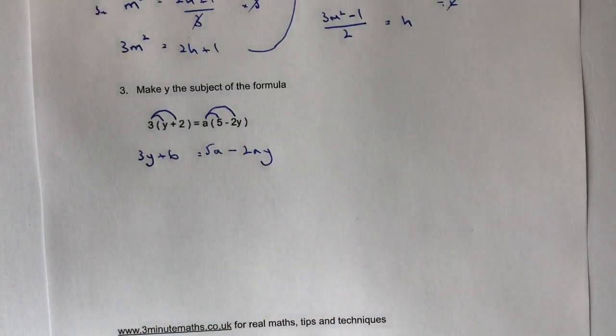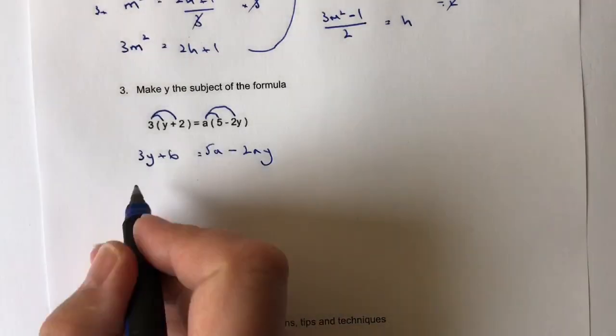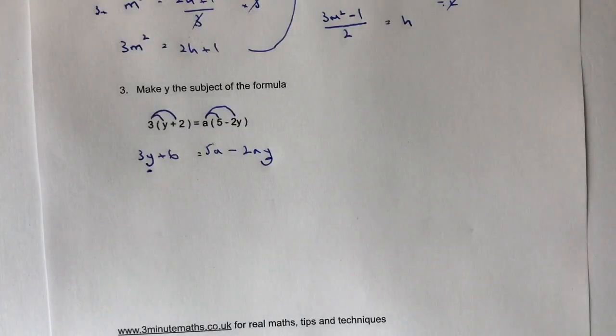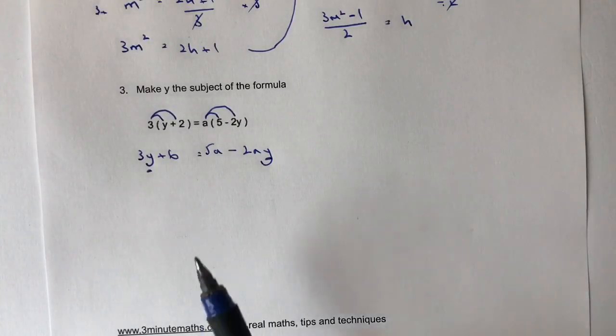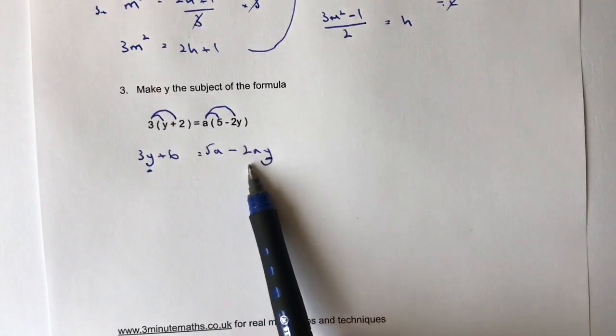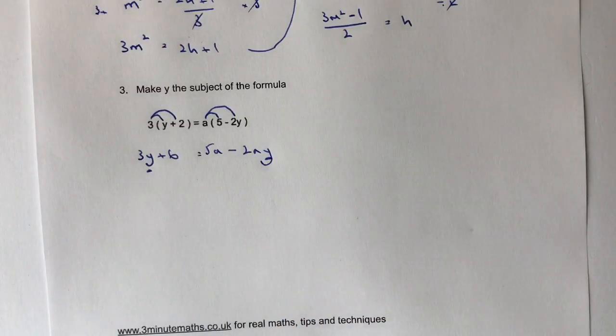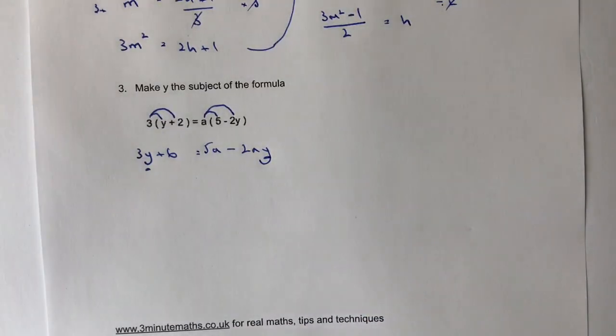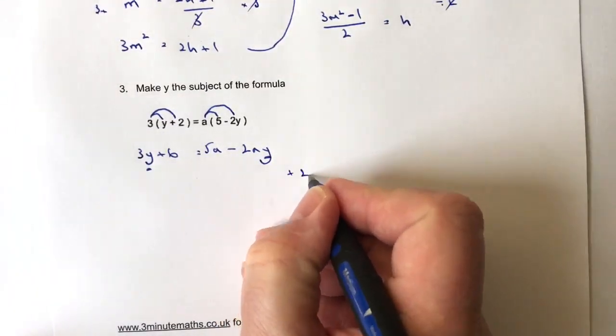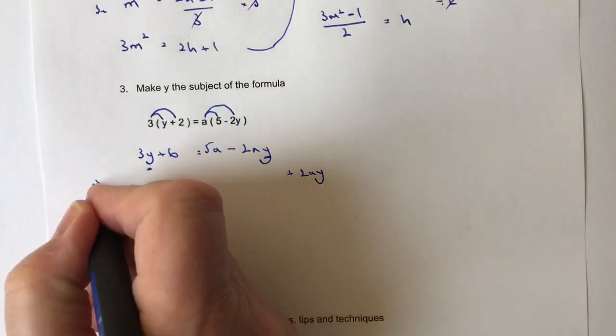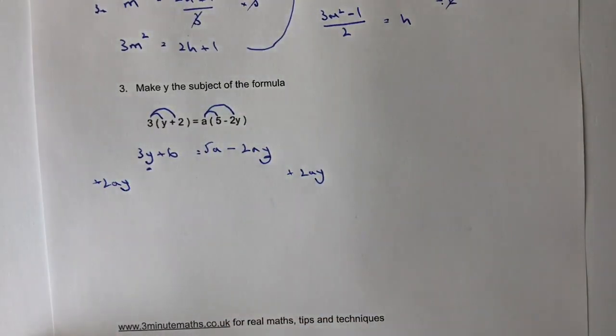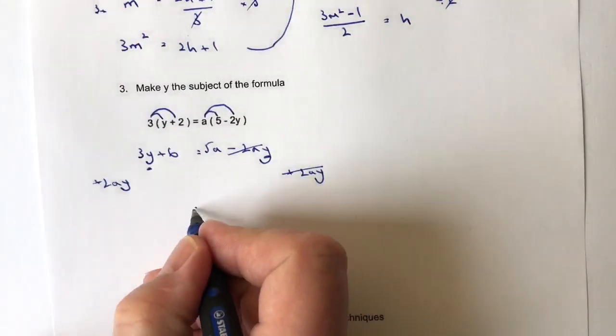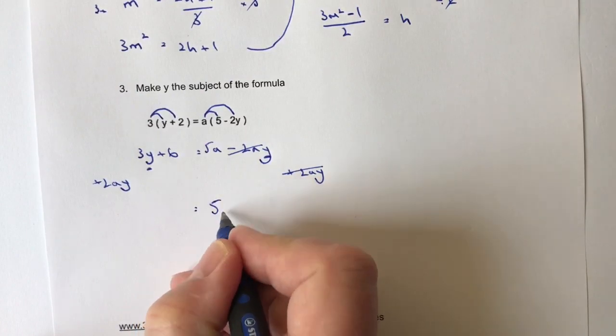So a little bit more complex because I've got a Y here and a Y here, but I need to get those together. So what I'm going to do is bring this expression over towards the left-hand side. The reason I'm going to do that is because I don't particularly want this minus sign here. What I'm going to do is add 2AY to both sides because if I do that, it means this and this cancel out. But on the right-hand side now, I get left with 5A.